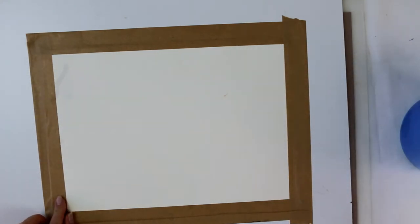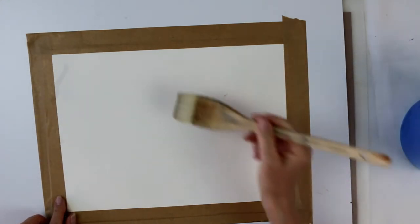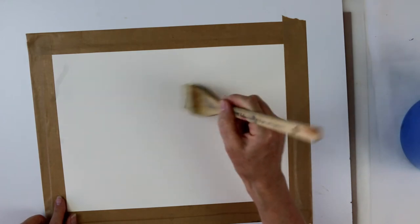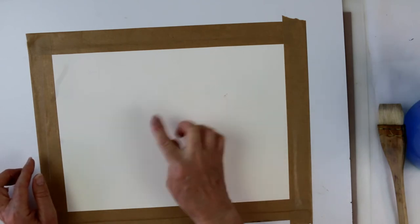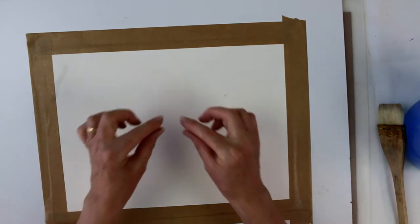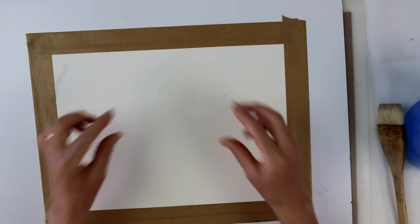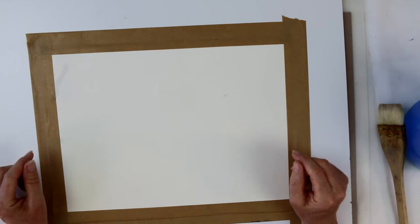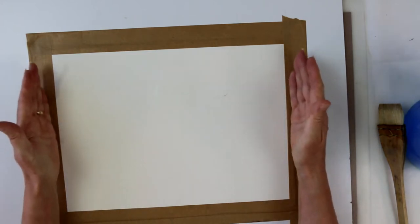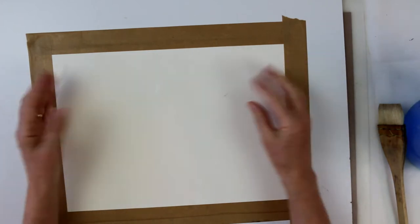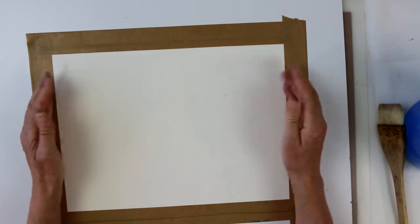Now, the problem is when you make your paper wet, as soon as you start to make it wet, the fibres in the paper will start to expand and to stretch. Now, the problem is if they're trying to expand and you've blocked the ends, they can't actually expand.